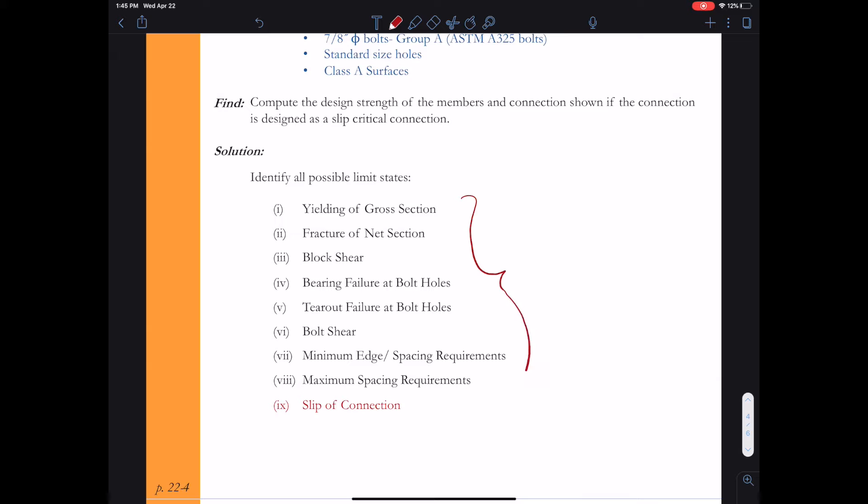Right? So we looked at all these limit states in example one when we looked at this for a bearing type connection. All right, so now I want to look at slip of the connection.